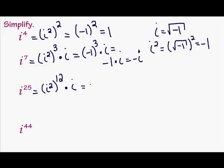I'm going to substitute negative 1 in again to the twelfth times i. Well, remember, any negative to an even power is positive. So this is going to give me 1 times i, which is i. So i to the 25th is i.